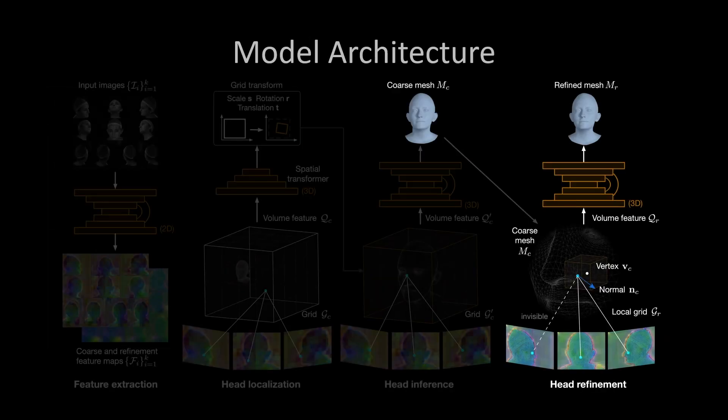Unlike the coarse stage with one big sampling grid, the refinement stage defines, for every vertex of the coarse mesh, a small 3D sampling grid centered at the vertex. The feature maps are then unprojected and fused into the small feature cubes. Instead of naively fusing features with equal importance across views, we introduce a view and surface aware feature fusion.